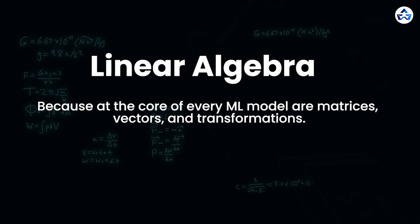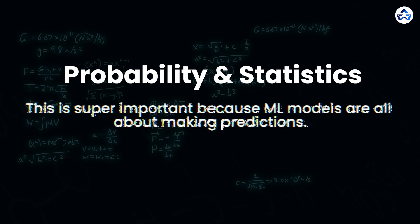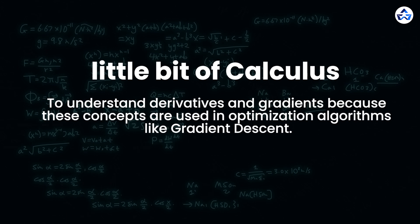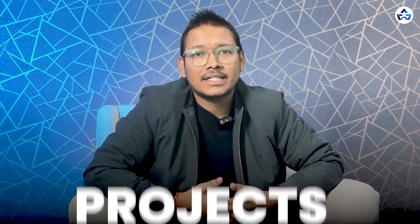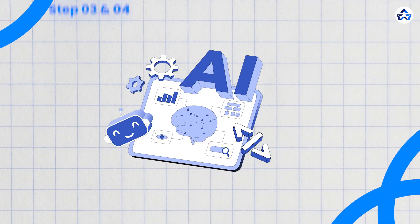If I break it down, it would be: linear algebra, because at the core of every ML model are matrices, vectors, and transformations; probability and statistics, which is super important because ML models are all about making predictions; and a little bit of calculus to understand derivatives and gradients, because these concepts are used in optimization algorithms like gradient descent. That's it. You don't even need to learn all of it upfront — you can learn the basics and go deeper while building your projects. You can spend around one month to learn maths. Do not spend more than one month.